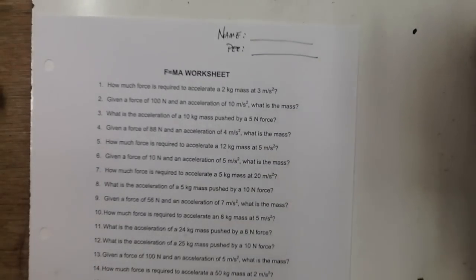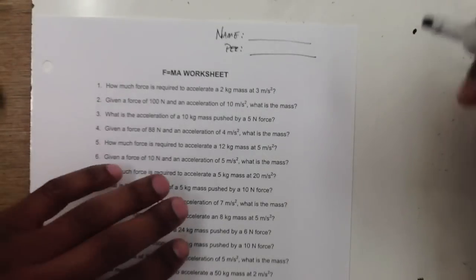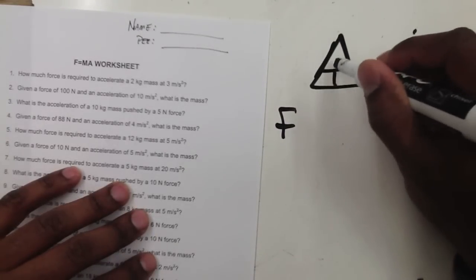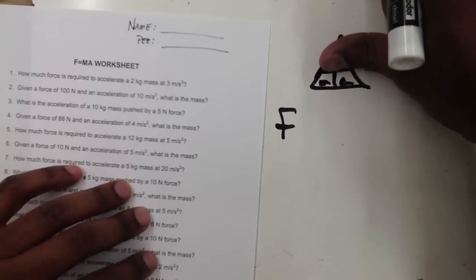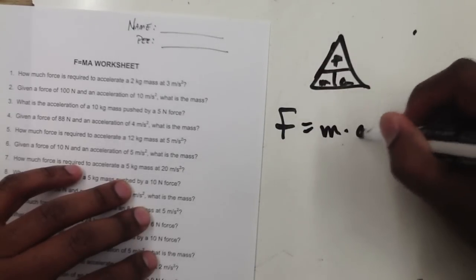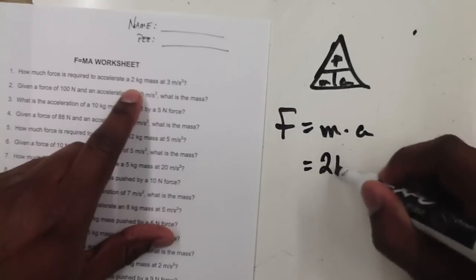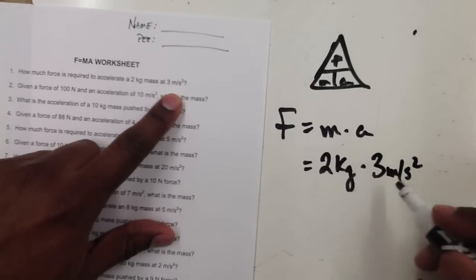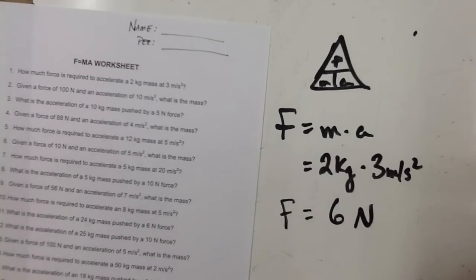The first example says: how much force is required to accelerate a 2-kilogram mass at 3 meters per second squared? We're looking for force, so we cover up F in our triangle and see that force equals m times a. Our mass is 2 kilograms, and we multiply that by 3 meters per second squared. Three times two is six, so our force is going to be 6 newtons, because force is measured in newtons.